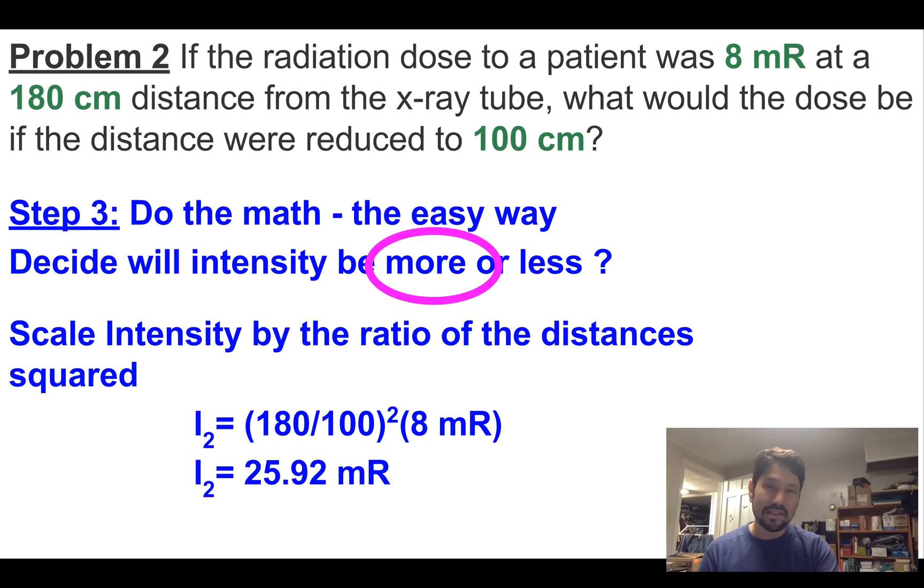Oh, and it's not I squared. It's I two. I two equals 25.92 millirads, not I squared. Let's stick with this one as our correct answer. Sorry for that little mislead. I didn't clean up that last slide.